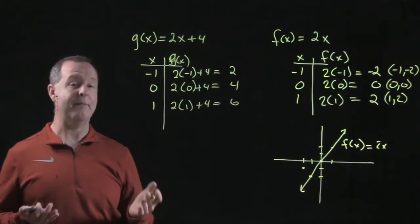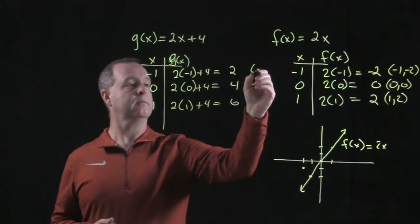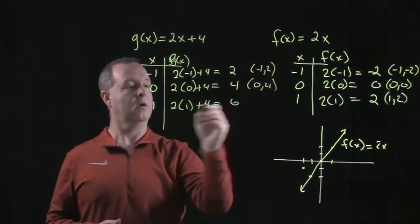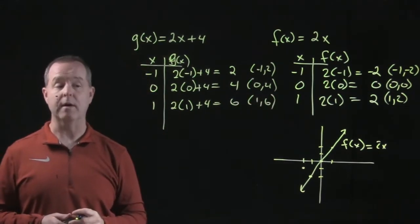And then from there, I have my coordinate points. I have a point of negative 1 and 2, 0 and 4, 1 and 6. So there are three coordinate points. From there, I'm able to go ahead and make a rough graph.